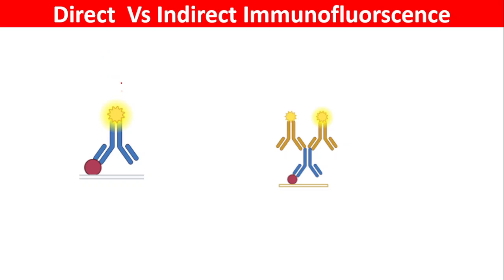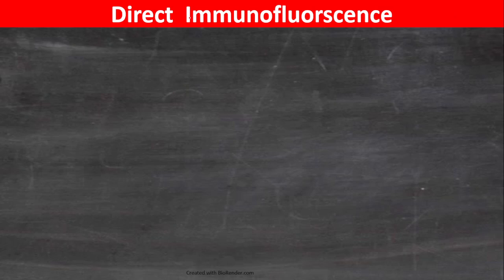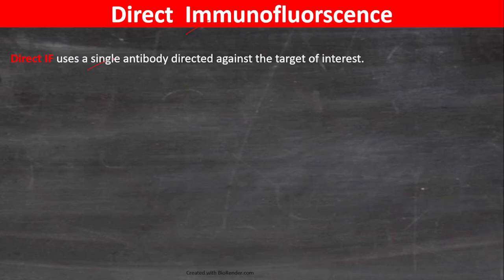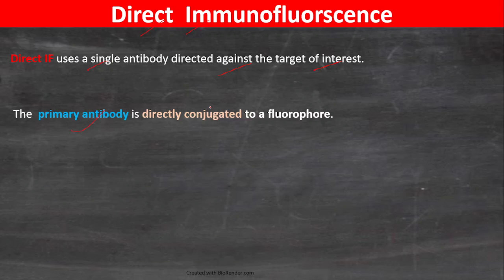In this lecture, I'm going to talk about the differences between direct versus indirect immunofluorescence. Direct immunofluorescence uses a single antibody directed against the target of interest. It is called 'direct' because the primary antibody is directly conjugated to a fluorophore — a fluorescent molecule.